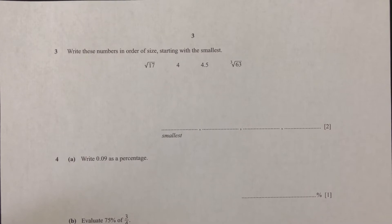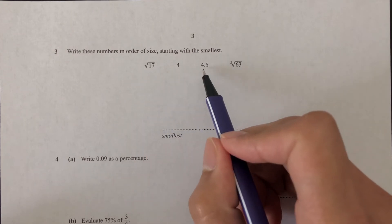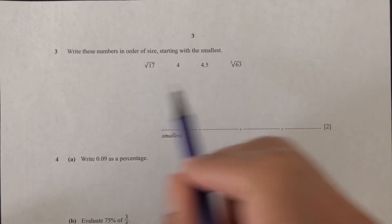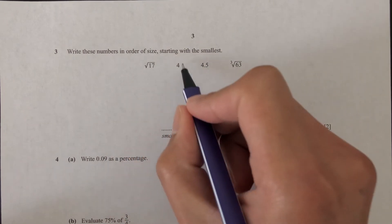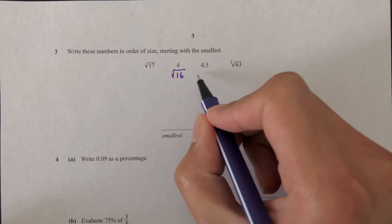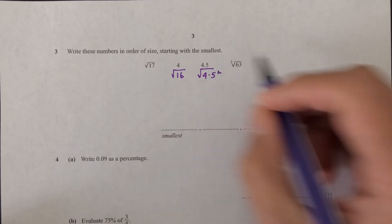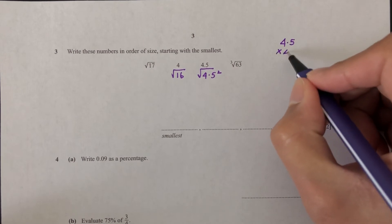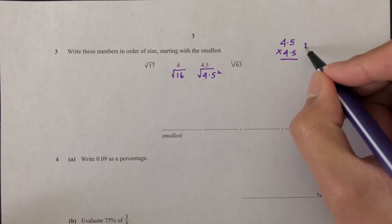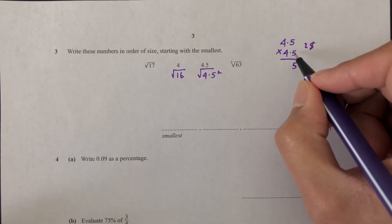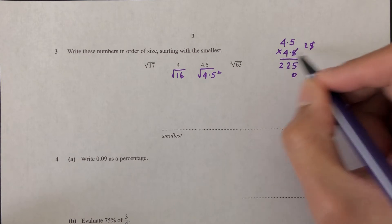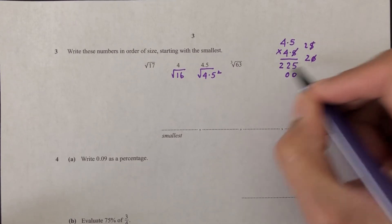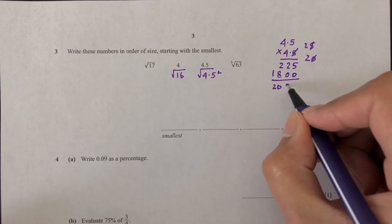Question number 3: write these numbers in order of size starting with the smallest. We have square root of 17, 4, 4.5, and cube root of 63. Let's convert the first three into square root form: square root of 17 stays as is, 4 is square root of 16, and 4.5 is square root of 4.5 squared. Calculating 4.5 times 4.5: 4 times 4 is 16, plus the cross terms gives 20.25.